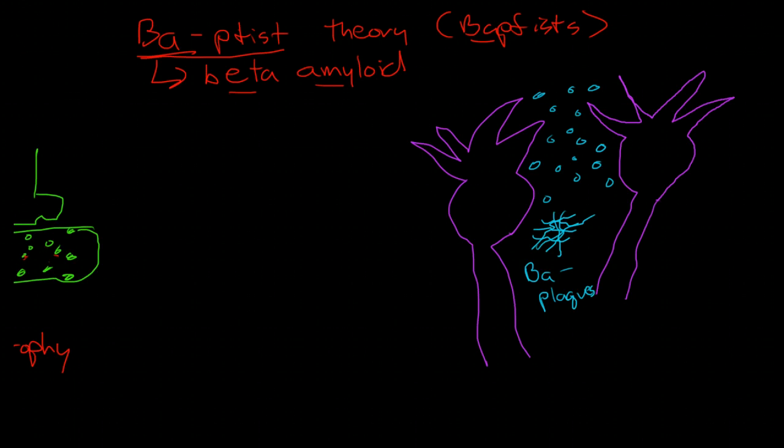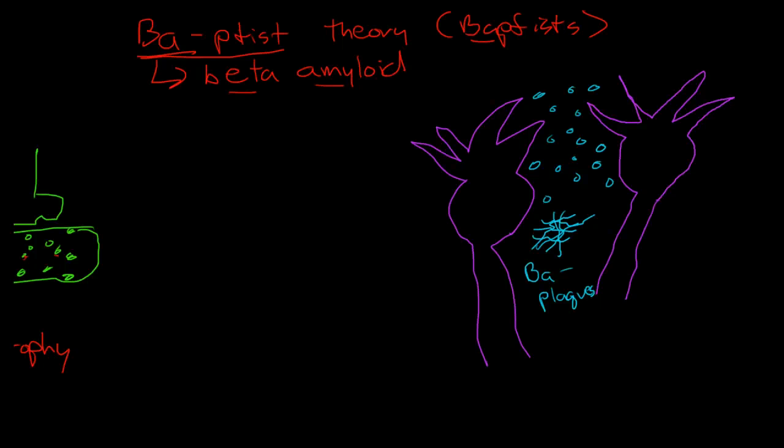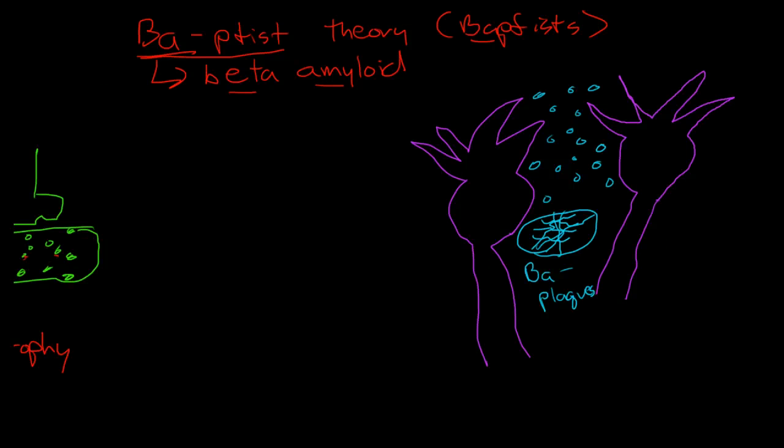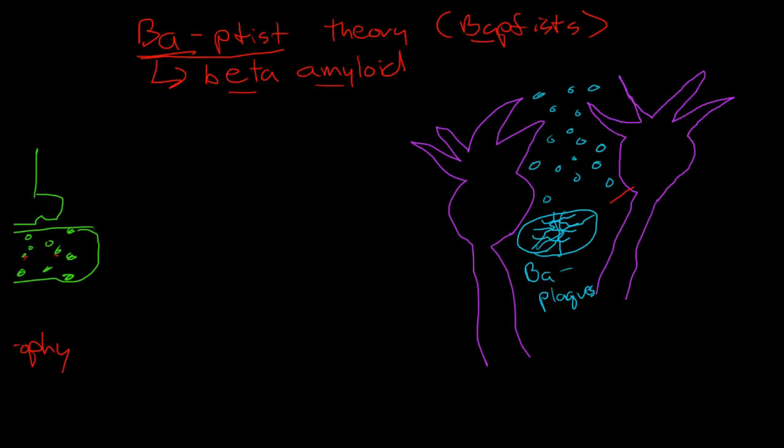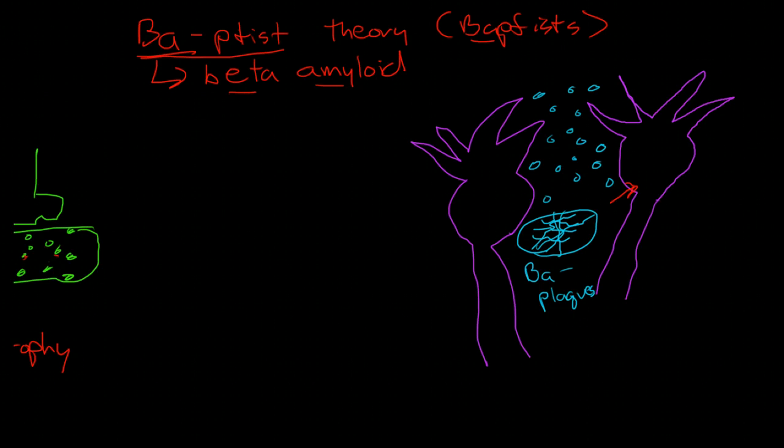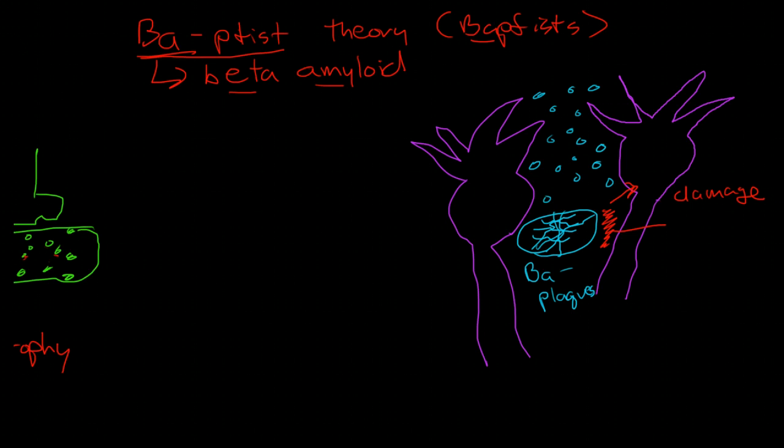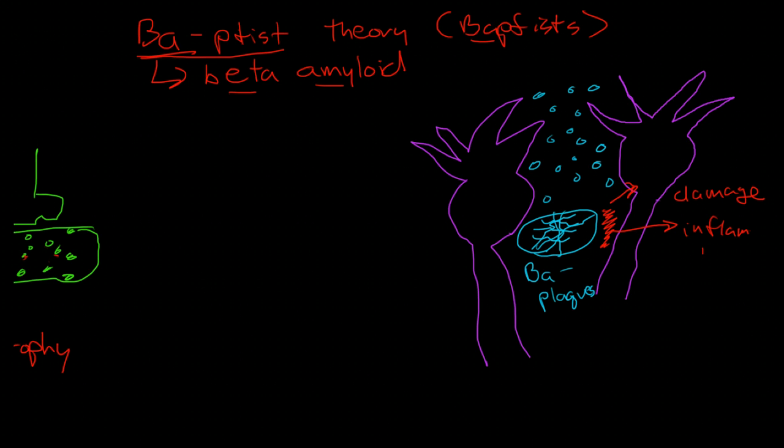Now what happens now is up for debate. We know people with Alzheimer's disease have lots of beta amyloid plaques, and people without Alzheimer's disease do not have lots of beta amyloid plaques. The theory is these beta amyloid plaques directly damage neurons and also cause inflammation, so we have direct damage and inflammation, and these two things cause neurons to die and lead to brain atrophy.